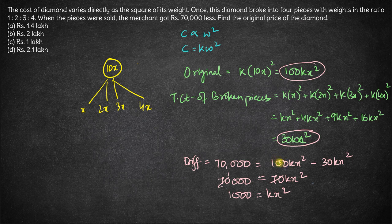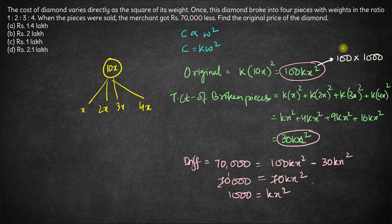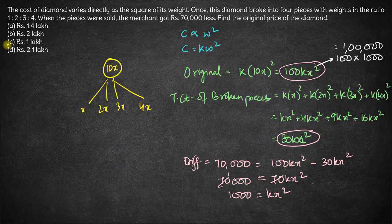The original price of the diamond is 100 × kx², which is 100 × 1,000 = 1,00,000 rupees, that is 1 lakh rupees. Hence the answer is option C: 1 lakh rupees.